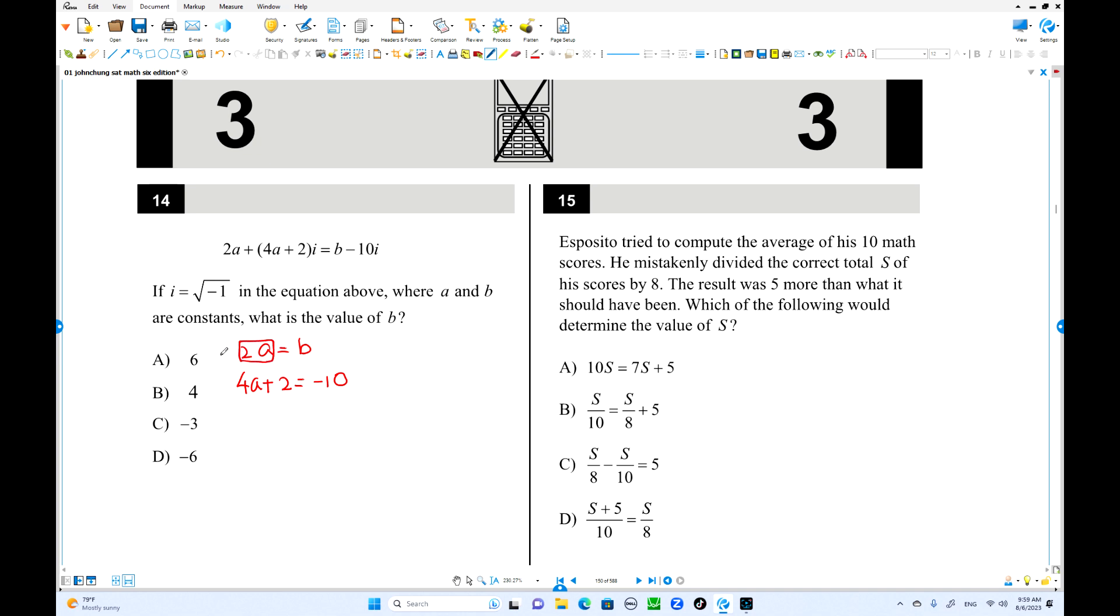2a times 4 on both sides, it's gonna be 2b. That is 4a is 2b over here. That is 2b plus 2 equals negative 10. 2b is now negative 12 divided by 2. Negative 6 is the answer.